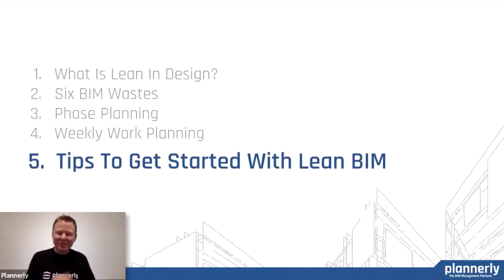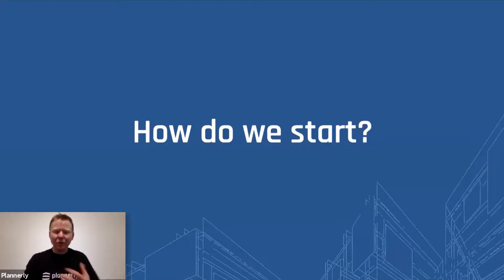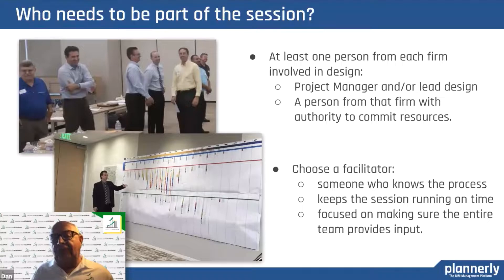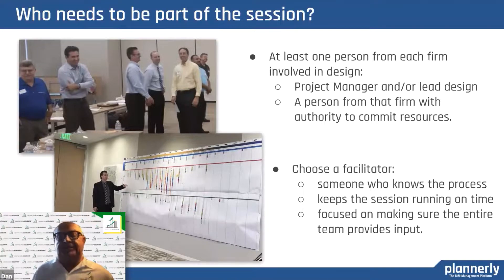So we've talked about lean in design, the waste we're trying to attack, phase planning from the milestone, and weekly work planning. Let's look at a couple of tips to get started. You pull in one person from each firm involved in the design — you need really two people initially: the design lead, and a person with the authority to commit the resources for that organization, because we're going to want to staff in a way that we can meet the commitments made. Then you want someone who's a facilitator — who knows the process, keeps the session running on time, and makes sure everybody on the team provides input.